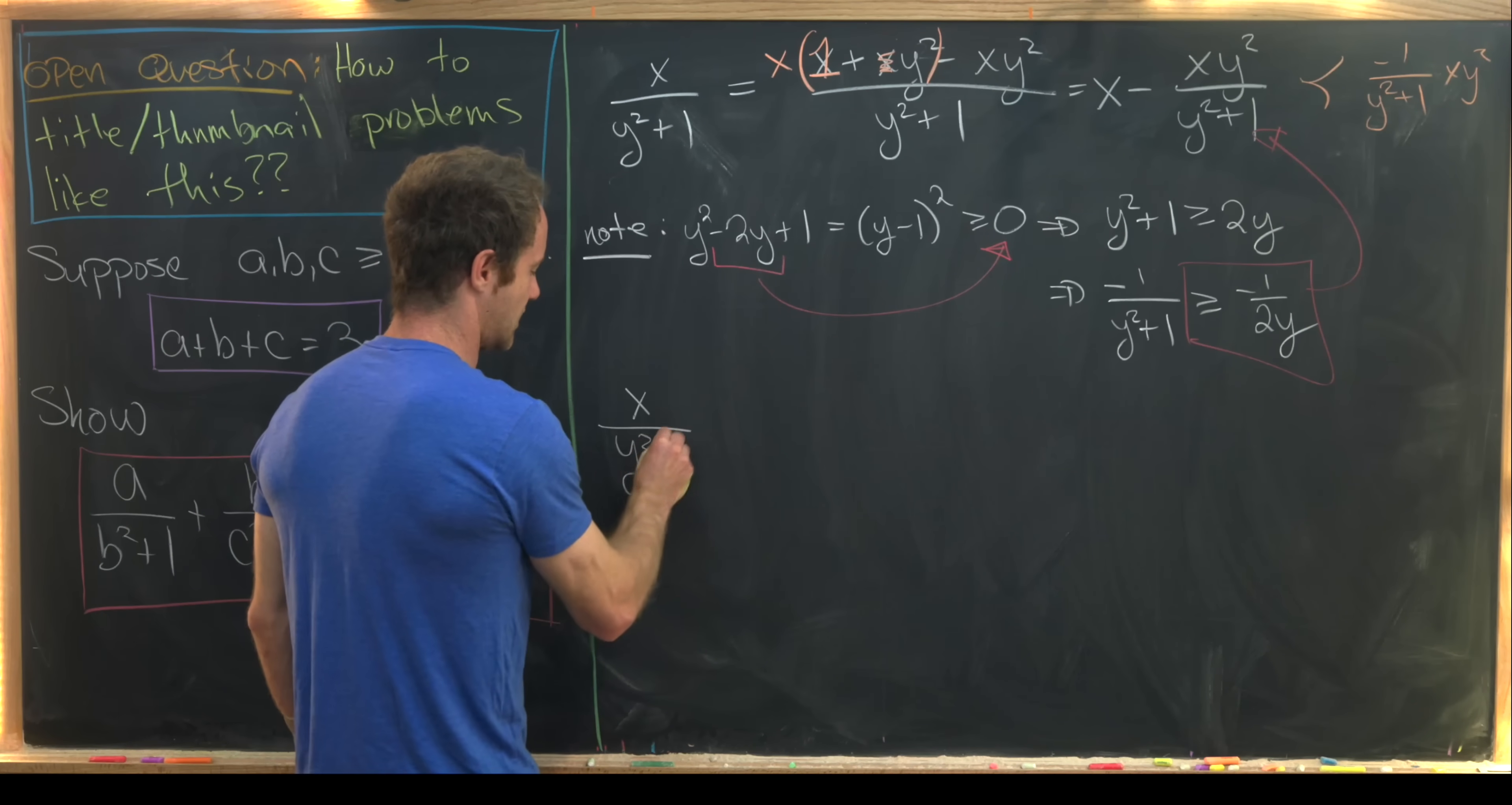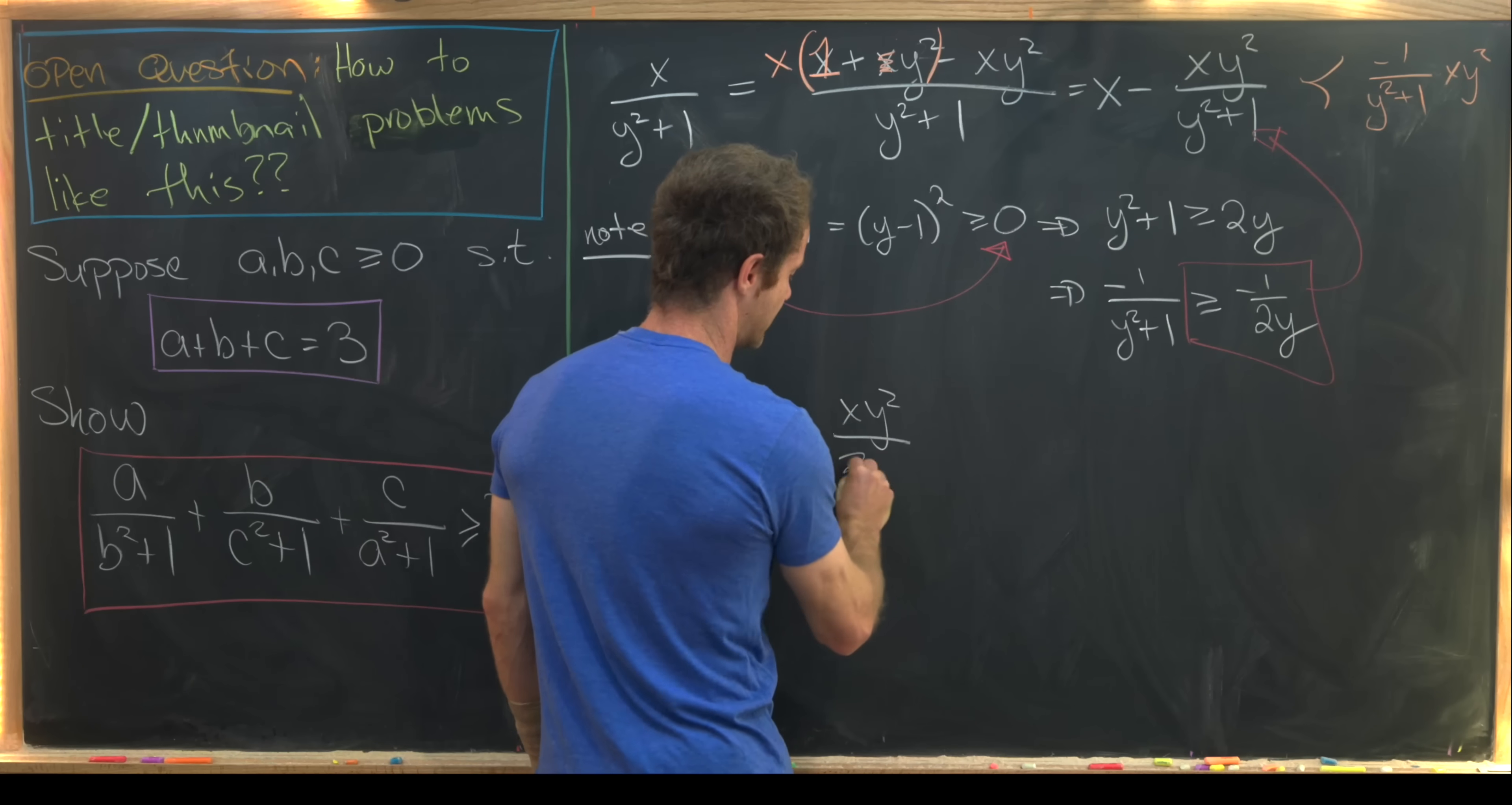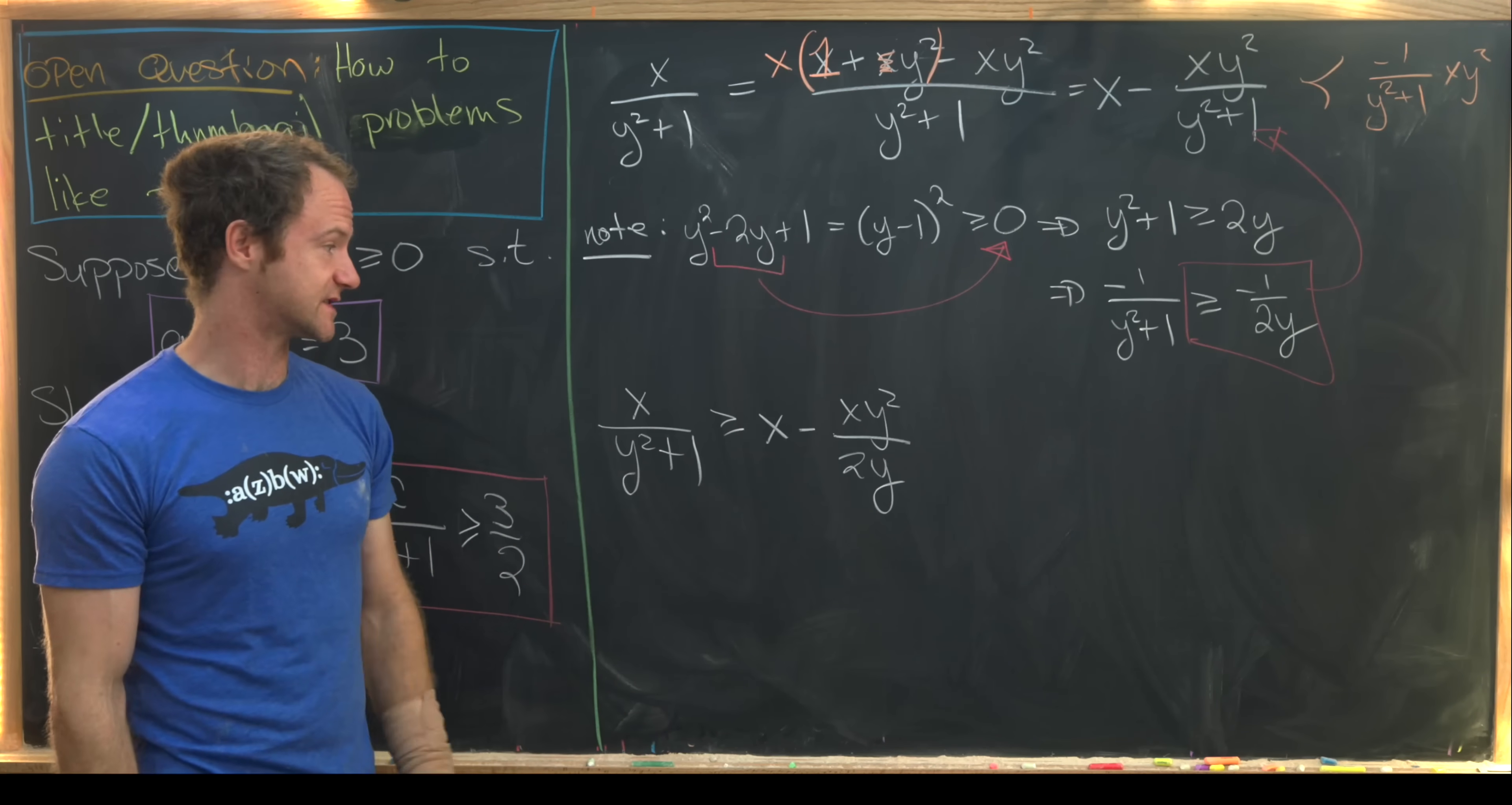So putting that all together, we have x over y squared plus 1 is bigger than or equal to x minus xy squared over 2y, where we just replace that denominator y squared plus 1 with this 2y by our previous discussion.